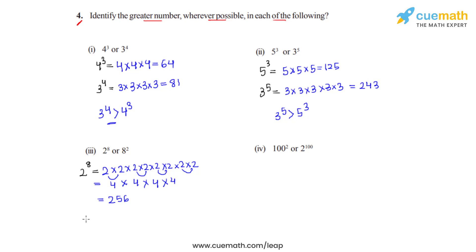Now I will expand 8 raised to 2, which is nothing but the square of 8, and we know that the square of 8 is 64. So in this case we can clearly say that 2 raised to 8 is greater than 8 raised to 2.